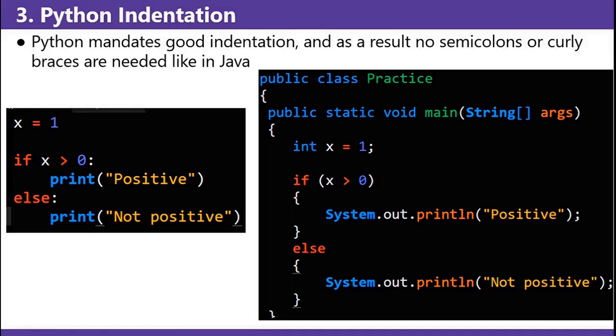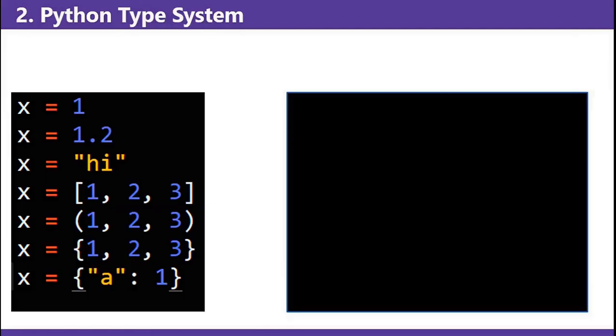Which code do you like more? The one on the left or the one on the right? Number two: Python's type system. Python allows a variable to hold any type.